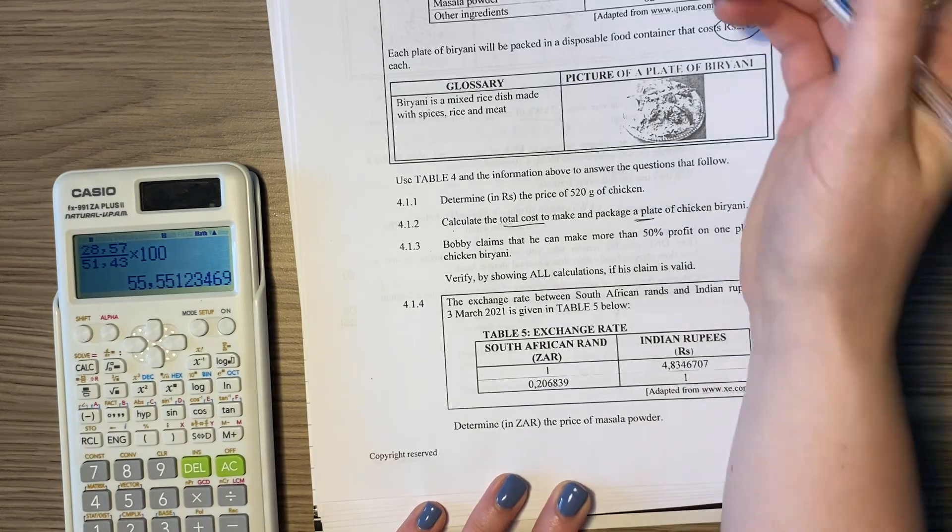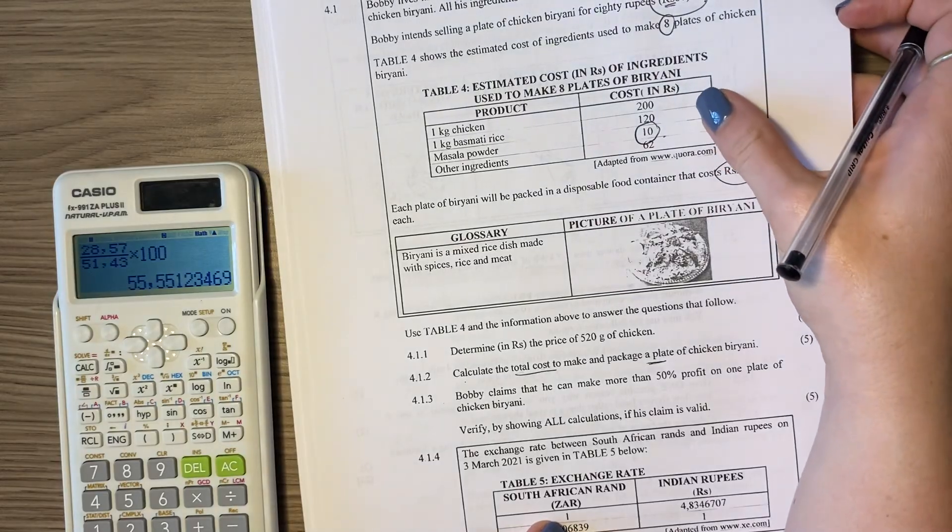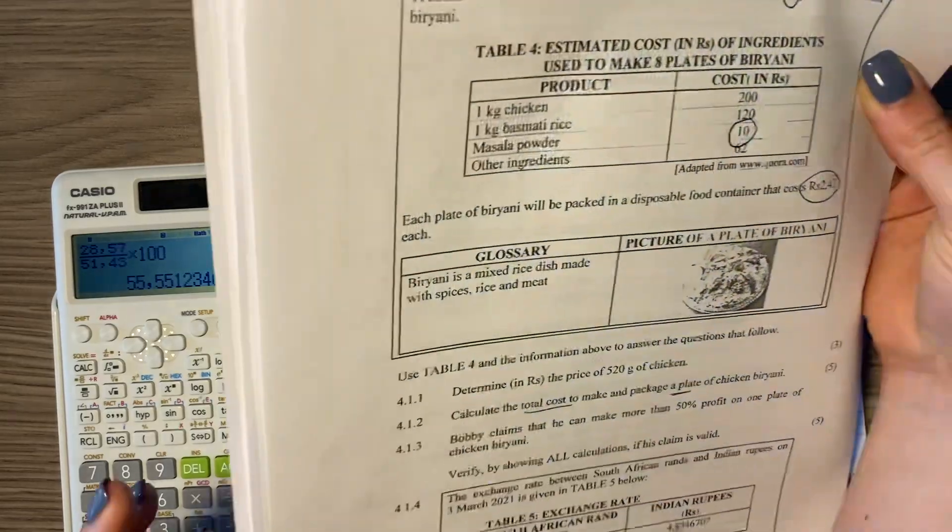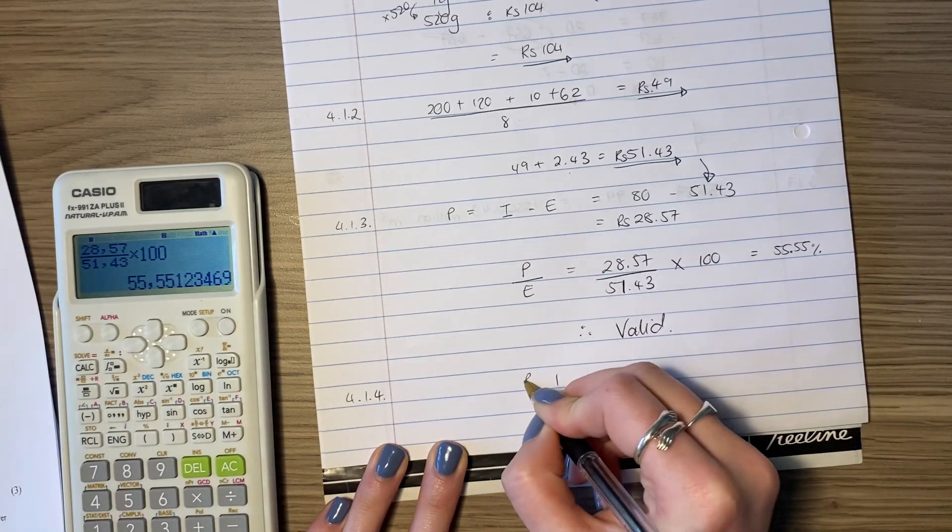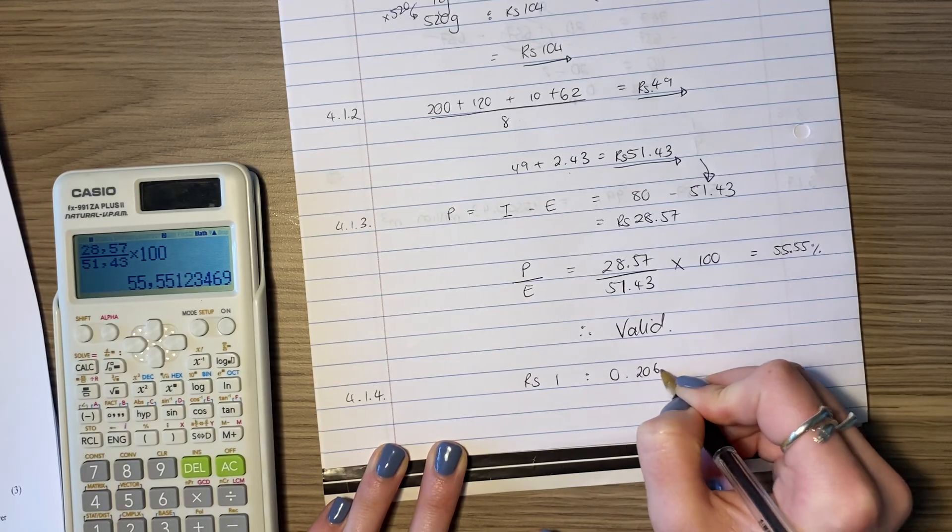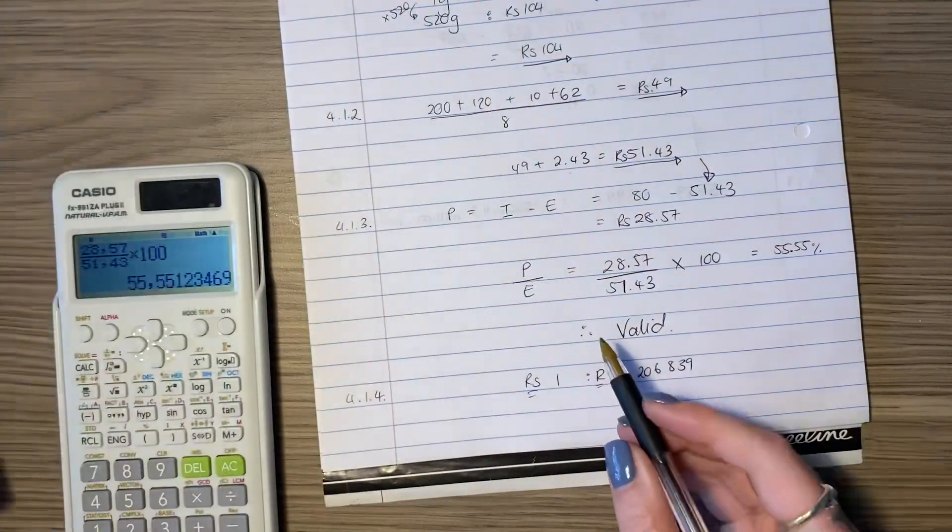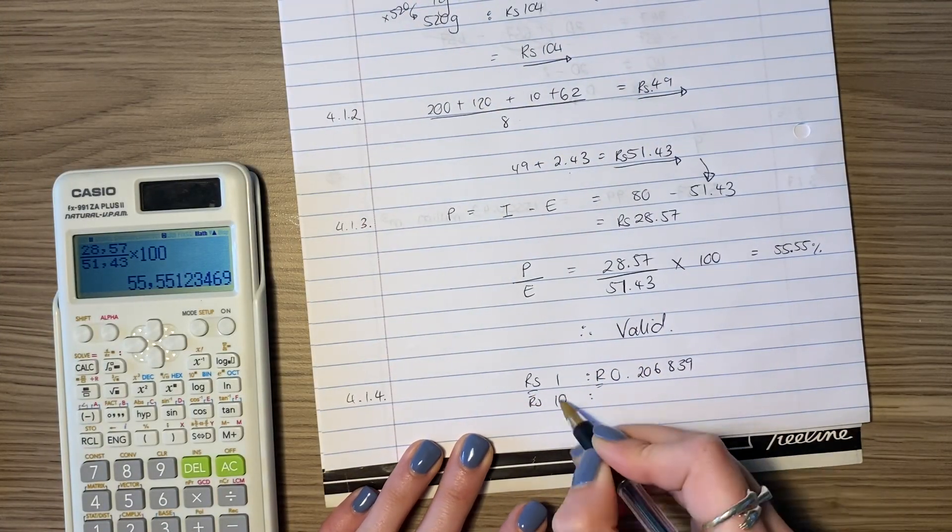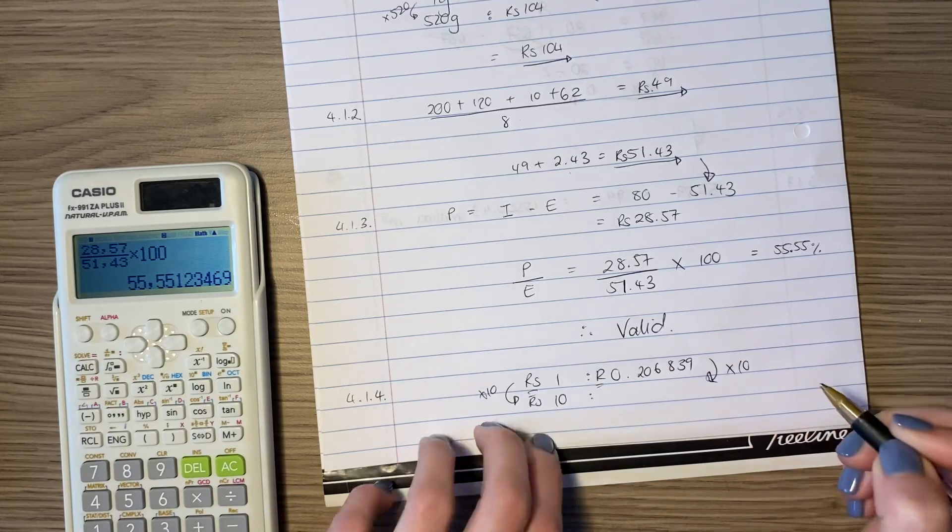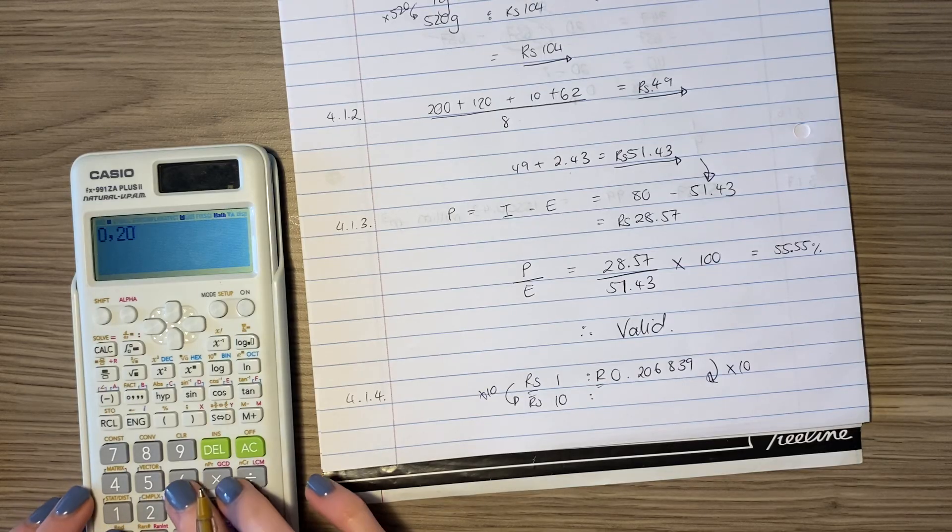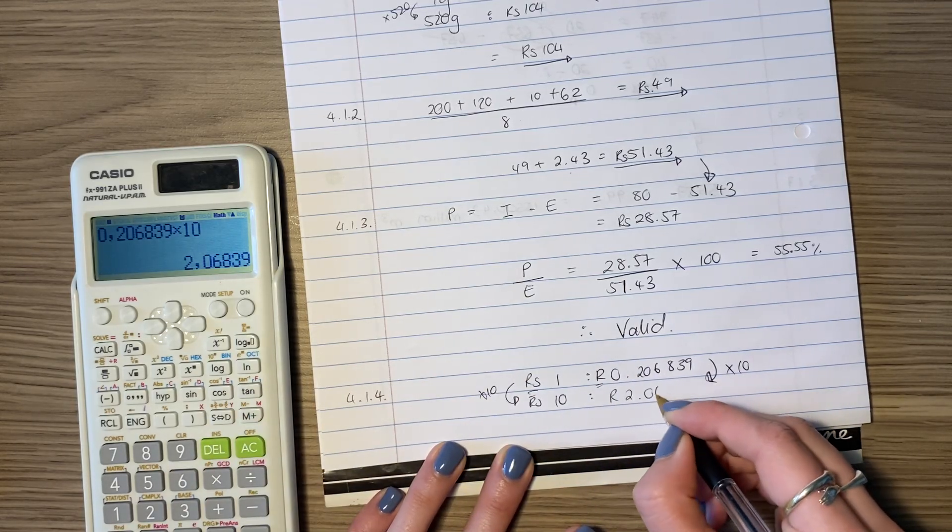It says, determine in rands the price of masala powder. Let's go up here. Masala powder was 10. So we are expecting that if it's 10 rupees, it's probably going to be fewer rands, because the rand is stronger. So let's go and do that calculation. We know that one rupee gives me 0.206839 rand. Be careful with your little signs here so you know what's going on. Where did I get that from? Over here. So then we're going to say, okay, but how many is 10 rupee? How many rand is 10 rupee? What do we do to the one rupee? We times it by 10. What do you do to the other side? What do you do to the one side? Do you do to the other? So I'm going to say 0.206839 times it by 10. And then it's going to be 2.06839.